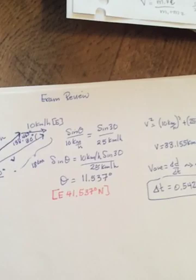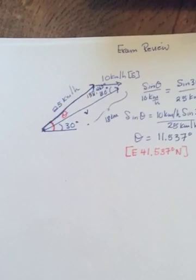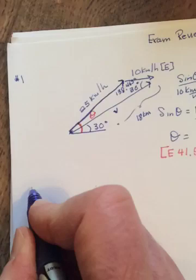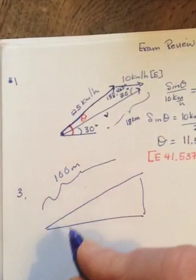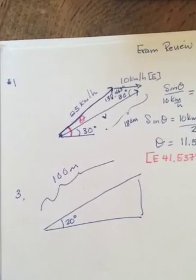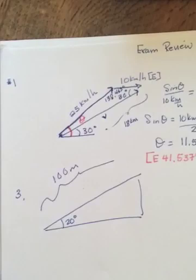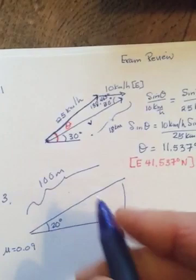Next on my list is number three. Number three says the skier starts from rest and skis down a 20-degree inclined plane that's 100 meters long. So incline plane, 100 meters long, is going to be this way, angled at 20 degrees. You start from rest. The coefficient of friction, mu, is 0.09.